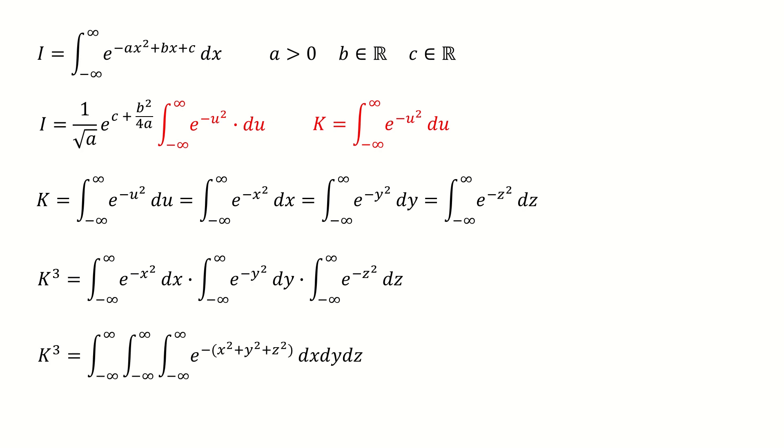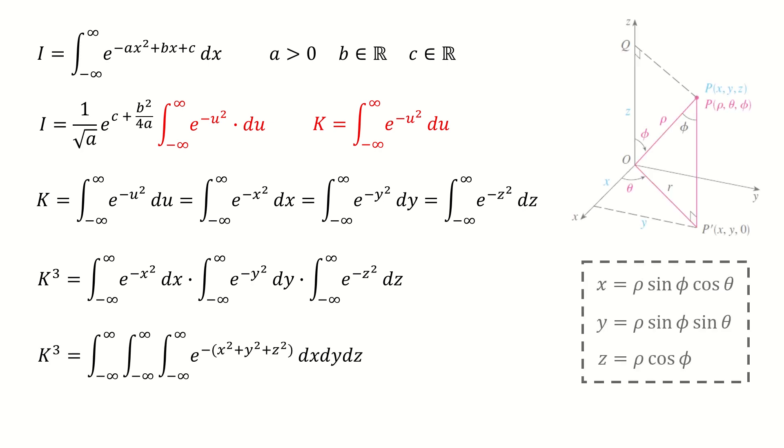Then we can find K cubed as a product of these three integrals. Next, we write it as a triple integral. Then we introduce this spherical coordinate. This figure shows the relation between the Cartesian coordinate and the spherical coordinate.